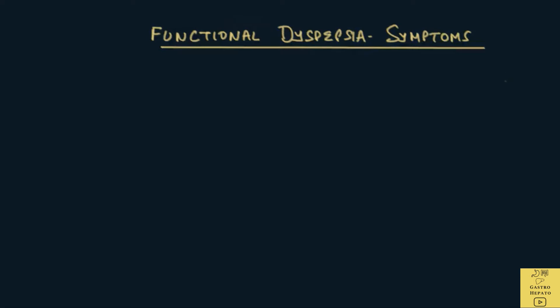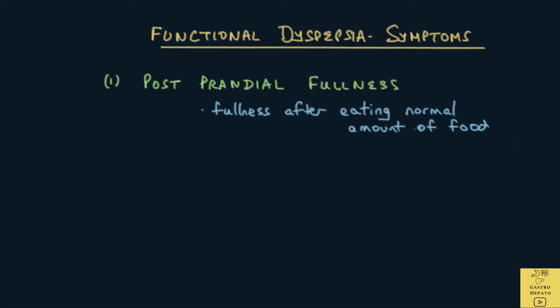There are three common symptoms that are seen in functional dyspepsia. One is called post-prandial fullness. It is fullness of the stomach after eating a normal amount of food. It is also described as an unpleasant feeling, like food is still in the stomach.